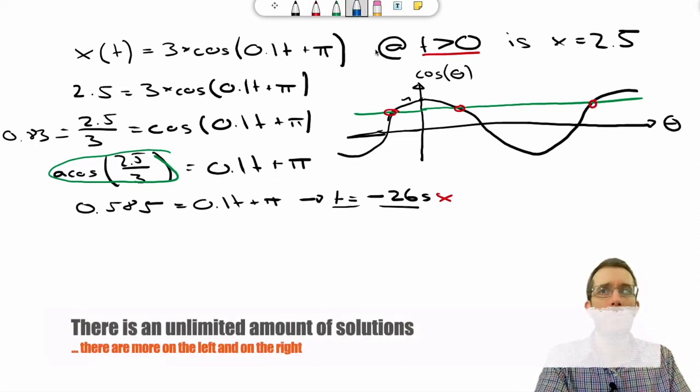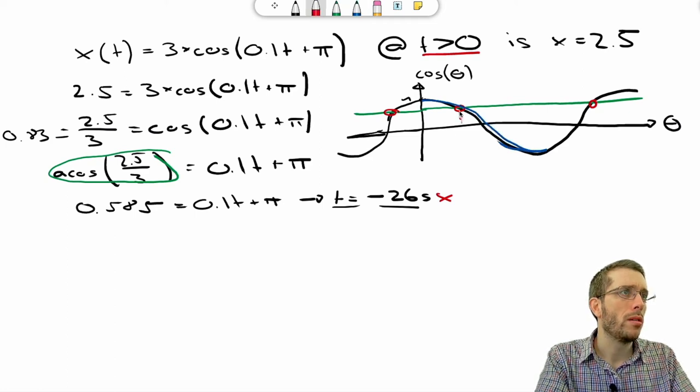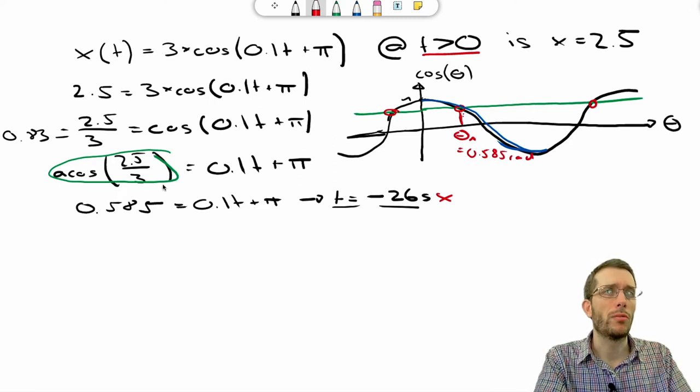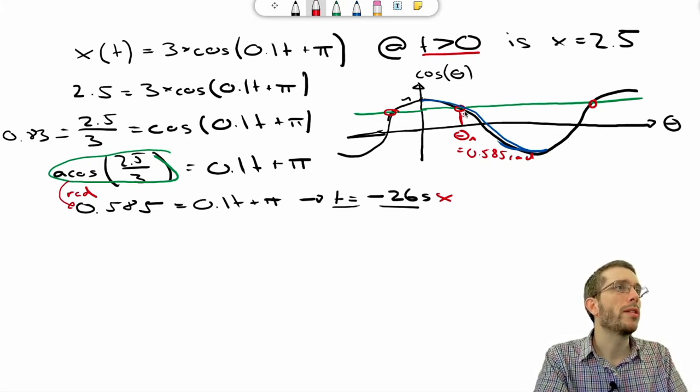Now your calculator, however, it keeps things simple. It will not give you all the solutions. All the calculator does, it gives you the solution between here and here. What the calculator just gave you was that we're going to get one solution, which is θ1, which is in this case 0.585 radians, because I had set my calculator to radians, so it spit me out the answer in radians. If you put it in degrees, the calculator of course will give you the answer in degrees, but the problem here is exactly the same. You will only get one angle, but there are several possible solutions.